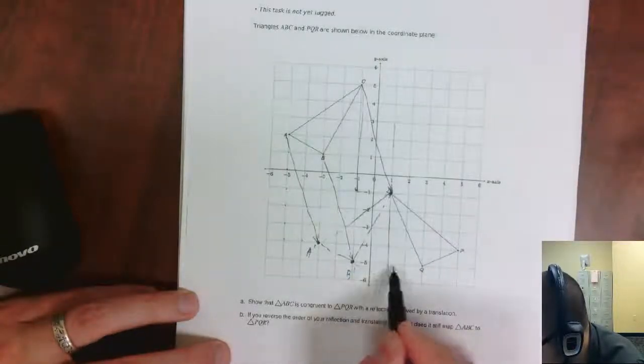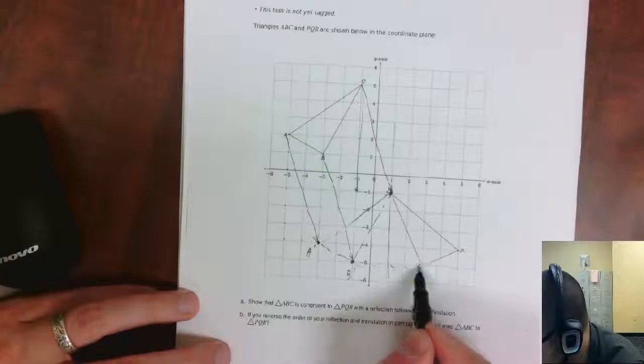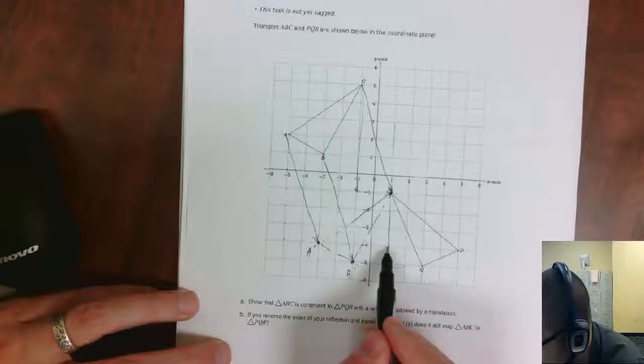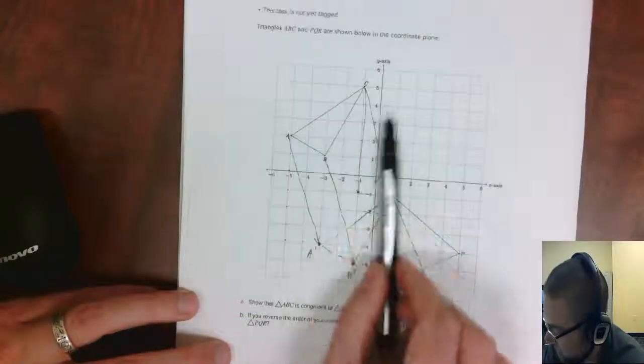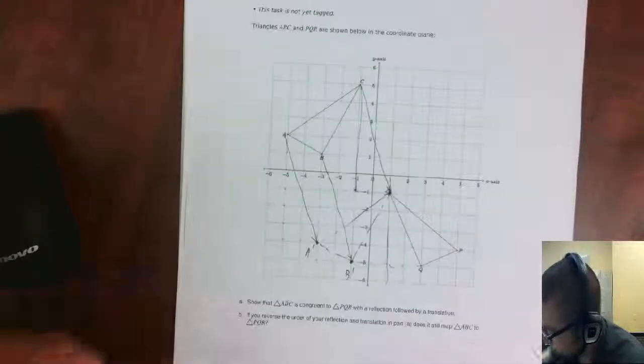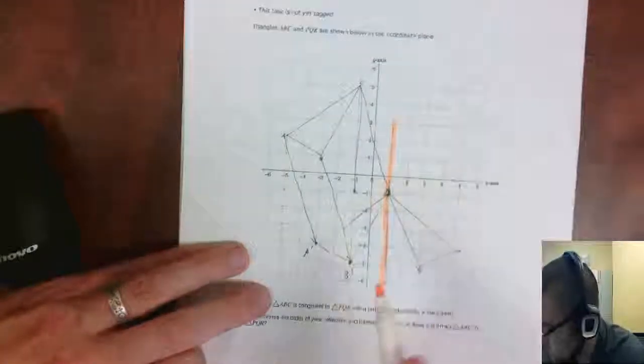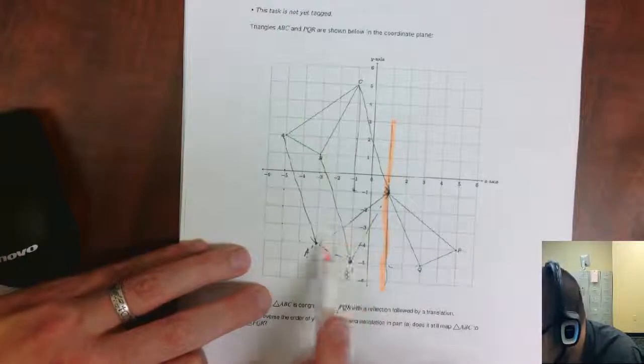B is 2 away, so it would go 1, 2, and then 2 to the other side, 1, 2. So it maps onto Q. And then A is 1, 2, 3, 4 away from this line x equals 1. Let me highlight that. So I'm reflecting over this line, not the y-axis. I'm reflecting over the line of x equals 1.